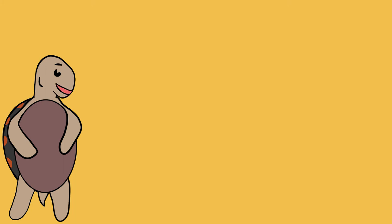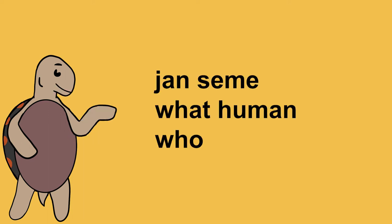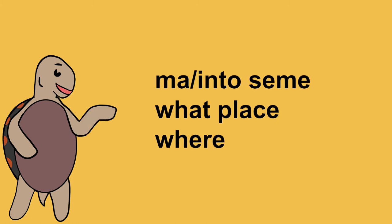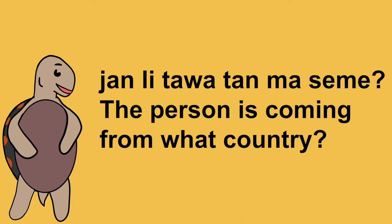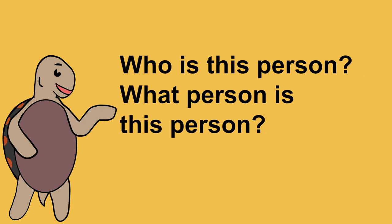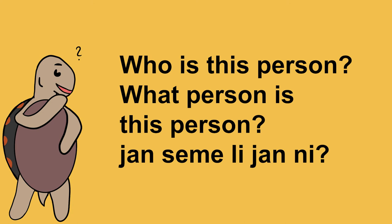You can see in both of those examples that the question is really just asking for the noun that fits in the spot 'seme' occupies. Also, you can use 'seme' as a modifier too. For example, 'yan seme' would be 'what human,' that is 'who,' and 'into ma seme,' literally 'what place,' would mean 'where.' What do you think 'yan li taua tan ma seme' means? It means 'the person is coming from what country?' Now try saying 'who is this person?' It should be something like 'yan seme li ya ni' in Toki Ma.